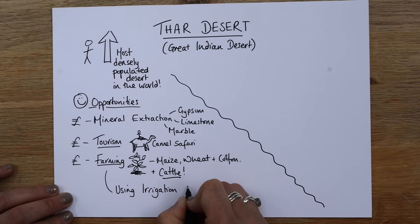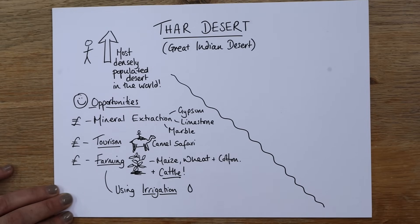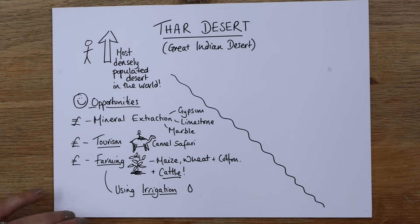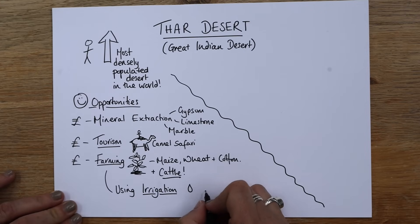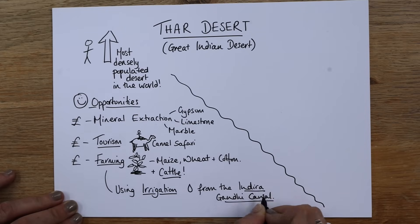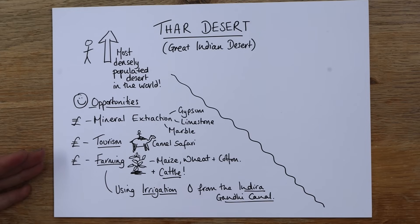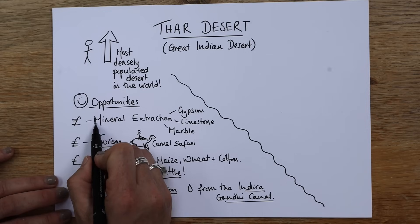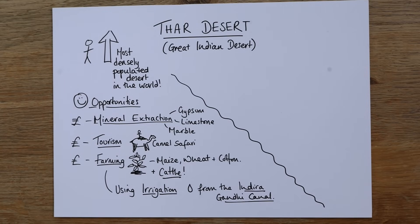This is all using irrigation. That word is quite important. Irrigation is where you set up a watering system — you're just watering the plant, not the ground — because evaporation is high and we would just lose that water otherwise. The irrigation comes from the Indira Gandhi Canal, which feeds irrigation systems that allow them to farm. All of those things — mineral extraction, tourism, farming — are going to boost the local economy and improve people's opportunities and quality of life.